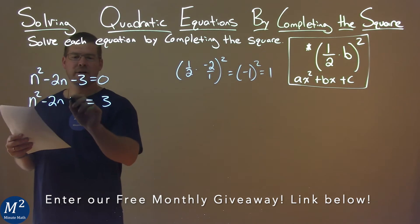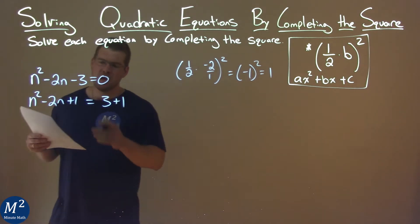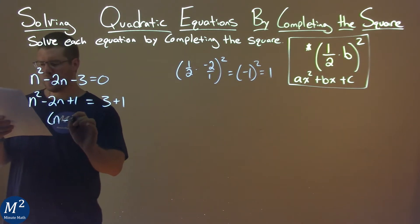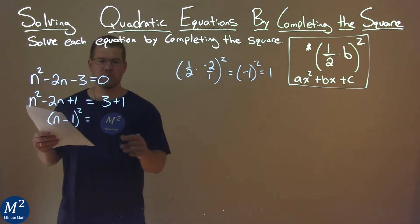I'm going to add 1 to both sides of the equation. The left-hand side is now a perfect square: (n - 1)². The right-hand side is 3 + 1 = 4.